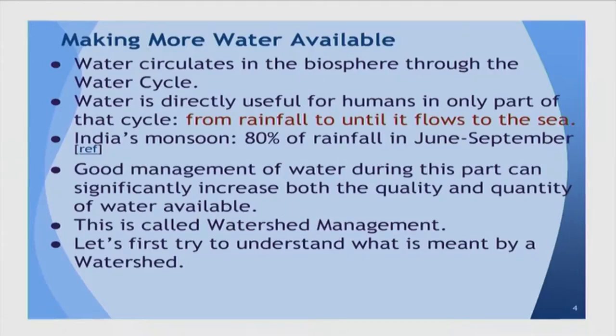The rest of the hydrological cycle is not directly accessible to us. So if we have to make any modifications, we can only do it from the point of rainfall until the water flows to the sea. In India we have a monsoon climate where roughly 80 percent of the rainfall happens between June and September. The southern tip of India has another return monsoon in November–December, but for most of the subcontinent, 80 percent of the rainfall in just a few months makes it very difficult to ensure adequate water supplies throughout the year.